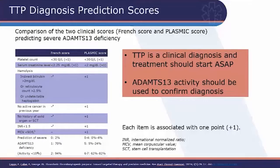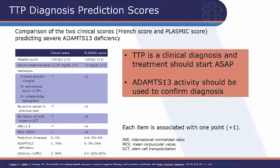There are two TTP diagnostic prediction scores: the French score and the PLASMIC score. The French score is very simple, using only platelet count and creatinine essentially, whereas the PLASMIC score uses substantially more lab and history data. However, TTP is ultimately a clinical diagnosis and treatment must start right away. ADAMTS13 activity is very important to confirm the diagnosis, but it will not be immediately available.